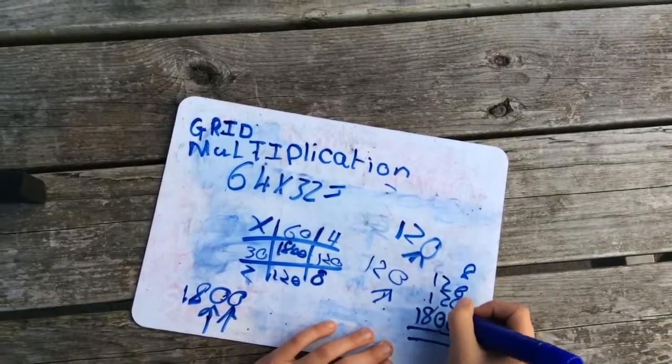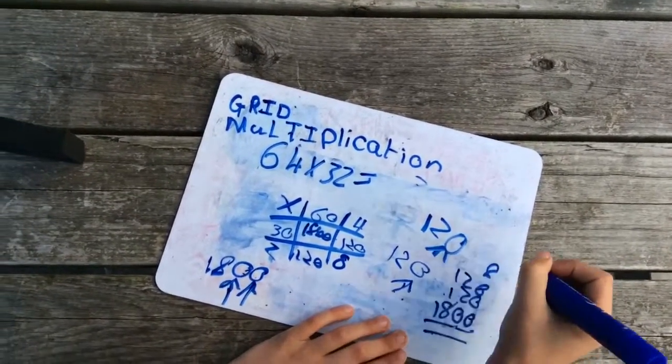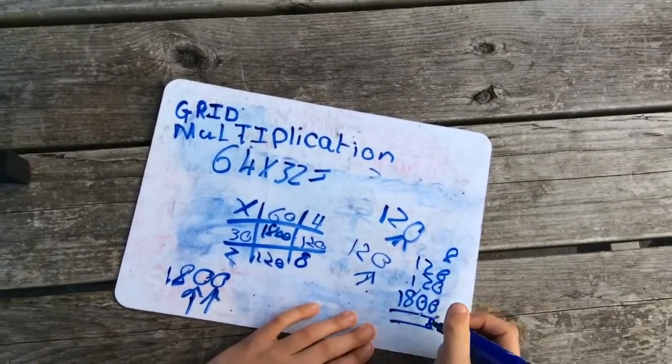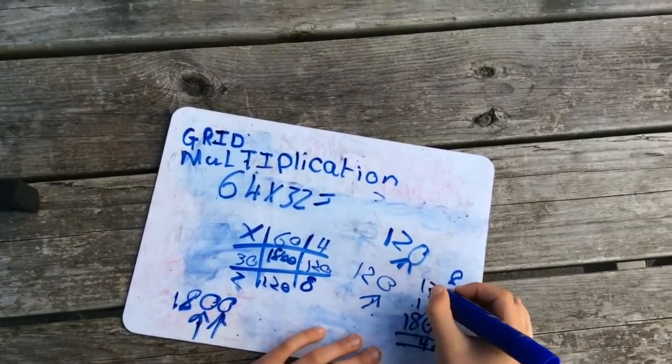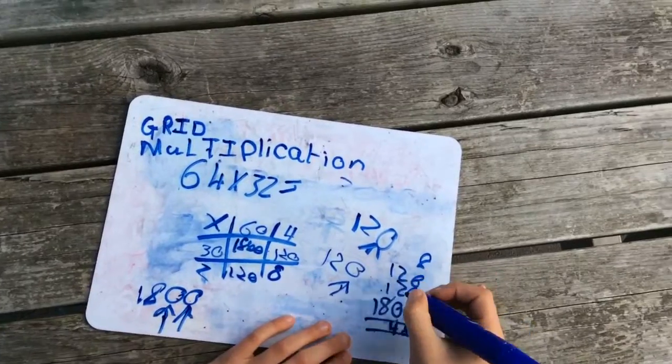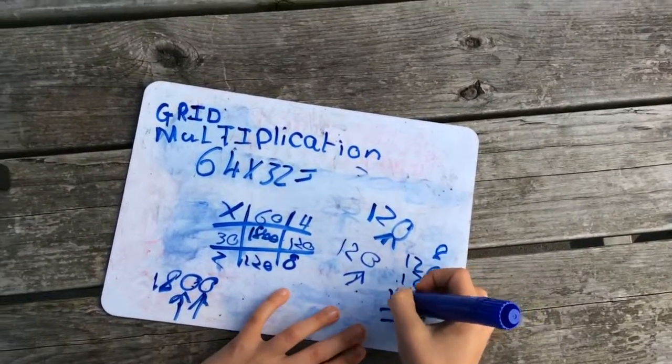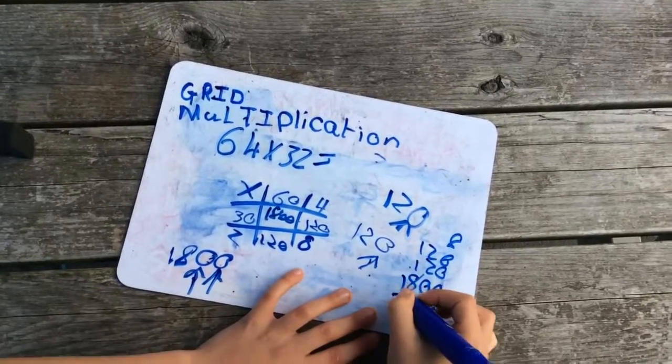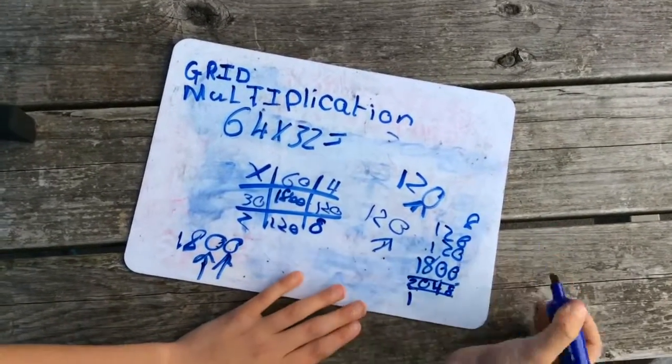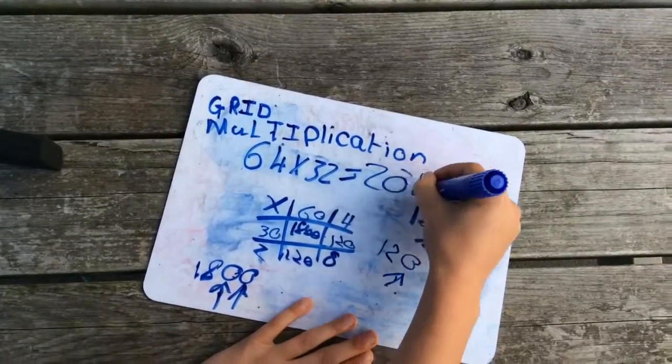So this row is just 3 0's and 1 8. So the answer is going to be 8. Then 2,800, 12,800. You put your 1 there, and then 2. So your answer will be 2048.